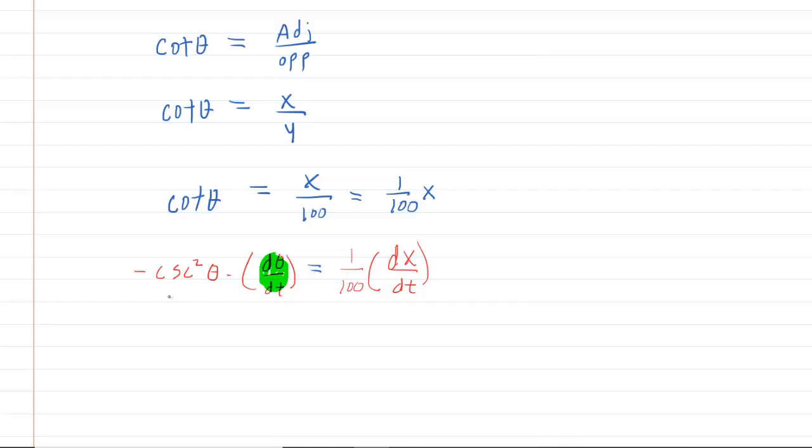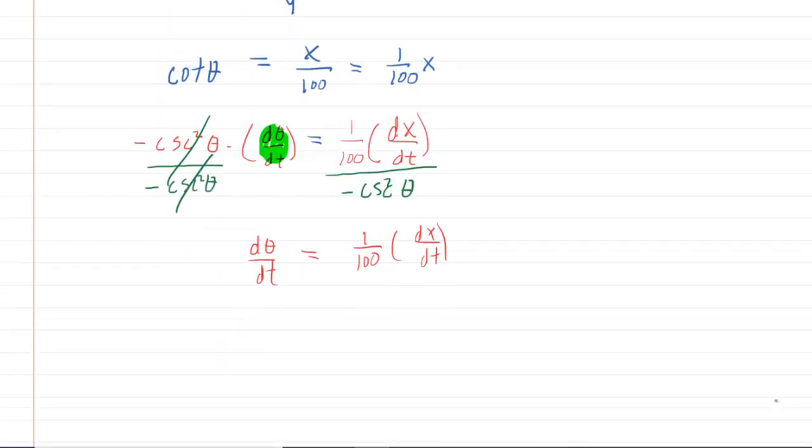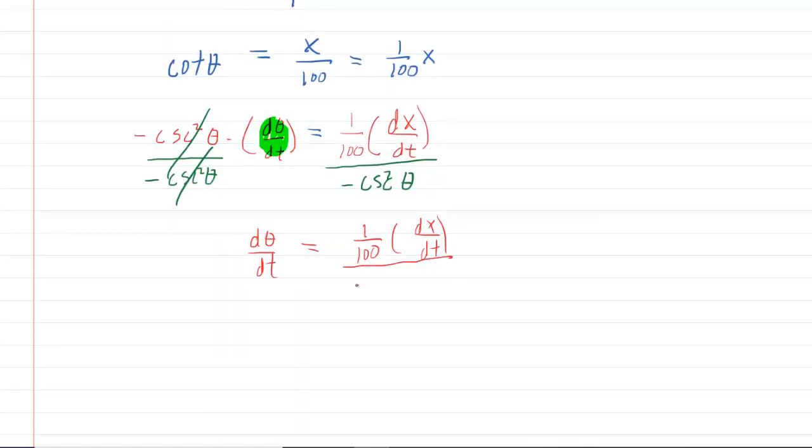So in order to solve for that, let's divide both sides by the negative cosecant squared of theta. These will cancel out. Now we have d theta dt is equal to 1 over 100 times dx dt over negative cosecant squared of theta.